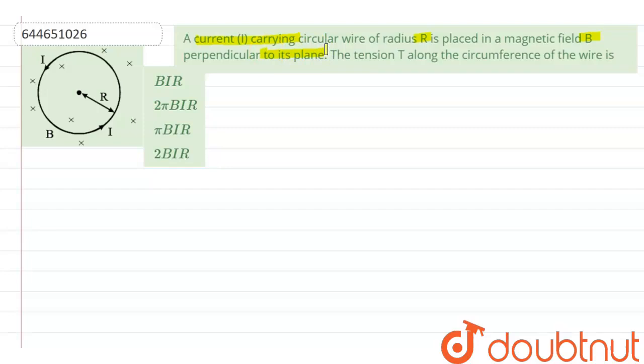So we have to find out what's the tension along the circumference of the wire. Now we know that whenever you have a current carrying conductor and it is placed in external magnetic field, it is going to experience a force and the magnitude of the force is given by ILB sin theta.